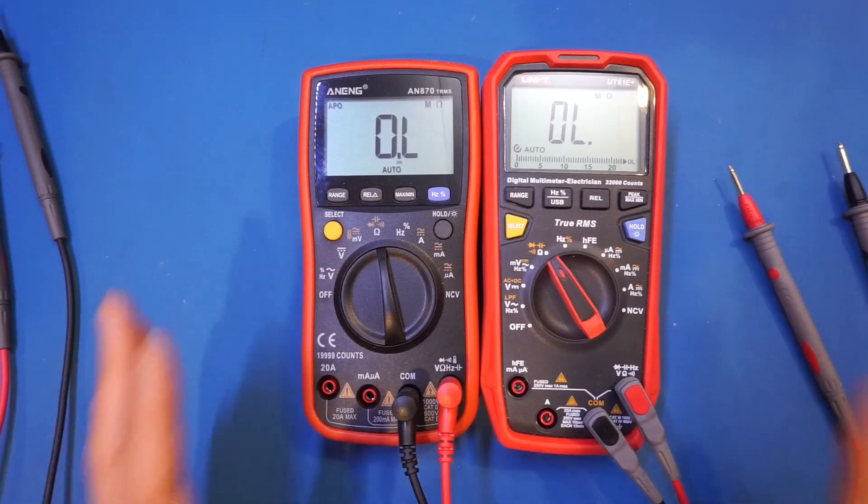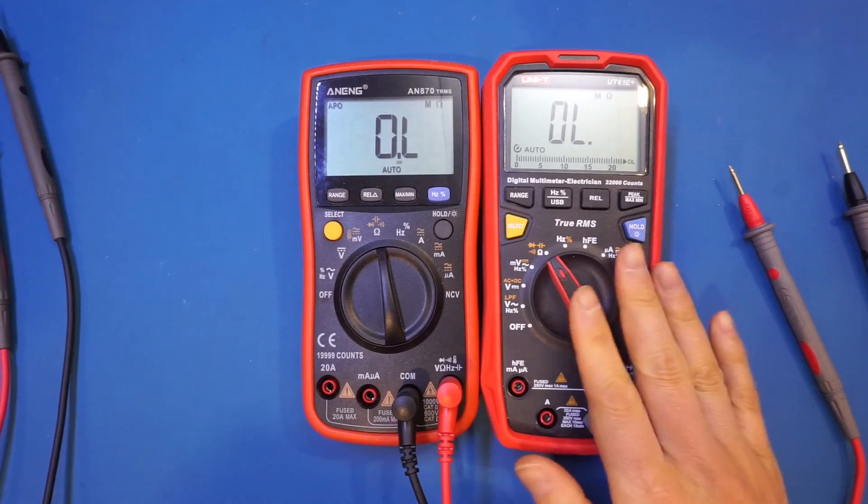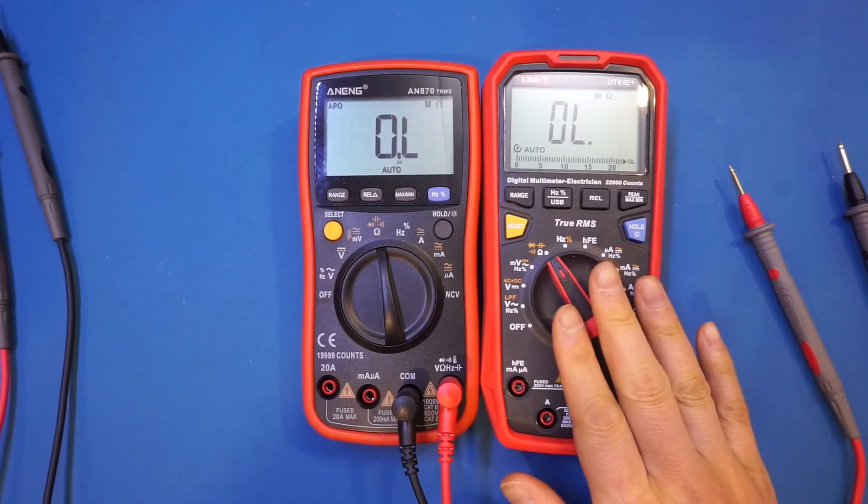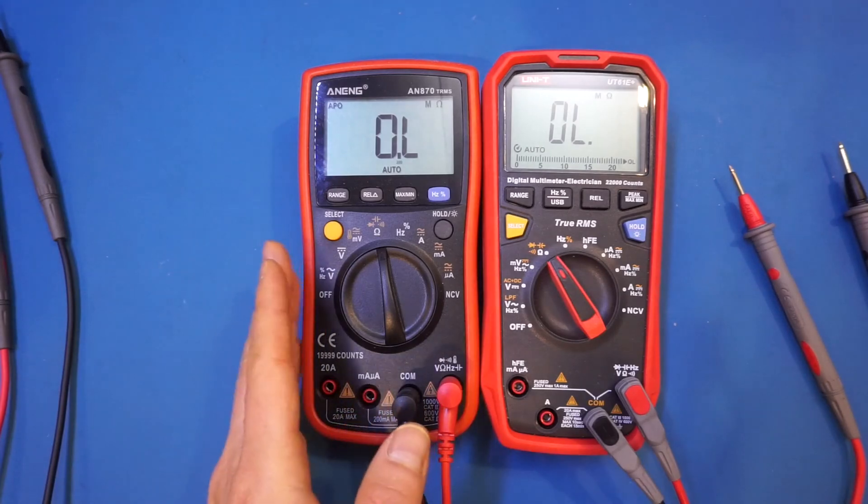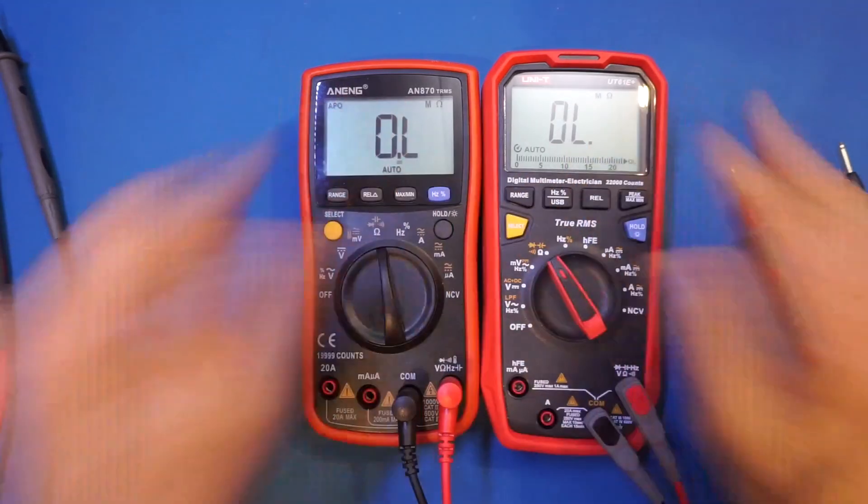In terms of the maximum resistance that can be measured by these meters, they're actually quite comparable. For the UT61E Plus, you can measure up to 220 megaohms, whereas for the AN870, you can measure up to roughly 200 megaohms. Those are limited by the count of these two meters.